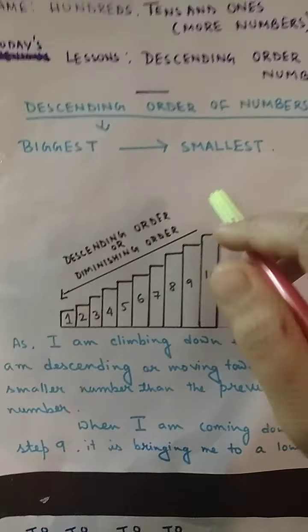When I am coming down — 1, 1, 1 number at a time — and finally when I reach 1, you can see that 10 is the biggest one and 1 is the smallest one. So when I climb down to 8, then 7, then 6, then 5, and finally reach 1, I am coming down to a lower number. Hence, when we arrange numbers from the biggest to the smallest, we say they have been arranged in descending order.